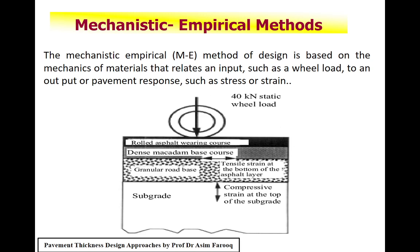The mechanistic empirical method is based on the mechanics of materials, relating input variables to output variables. The input variable is the wheel load, while the output variables are stresses and strain. These responses are used to predict different types of stresses, validated from both laboratory and field data.